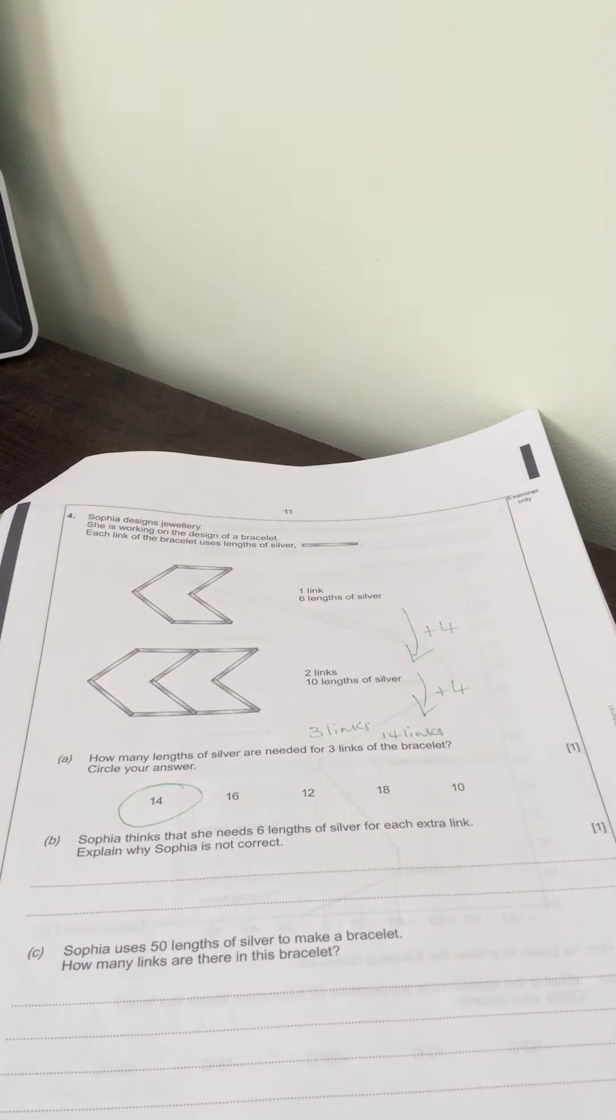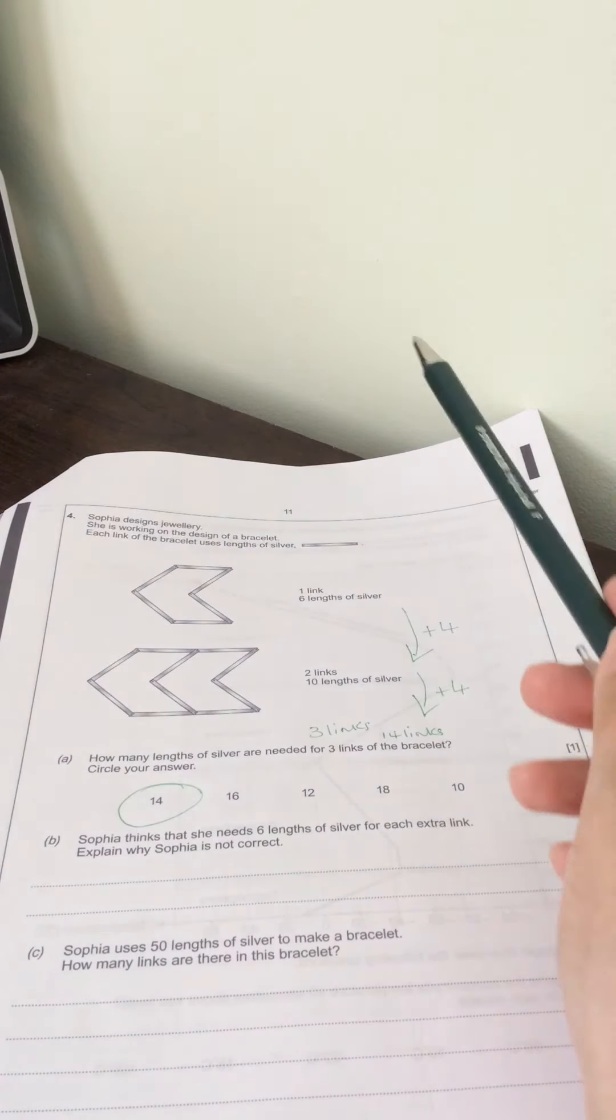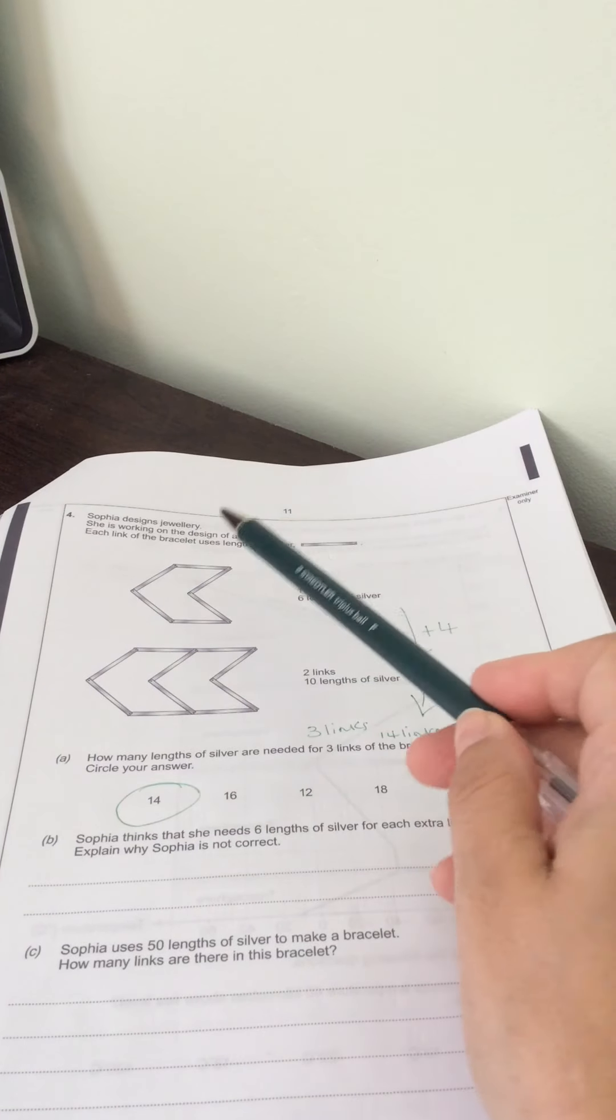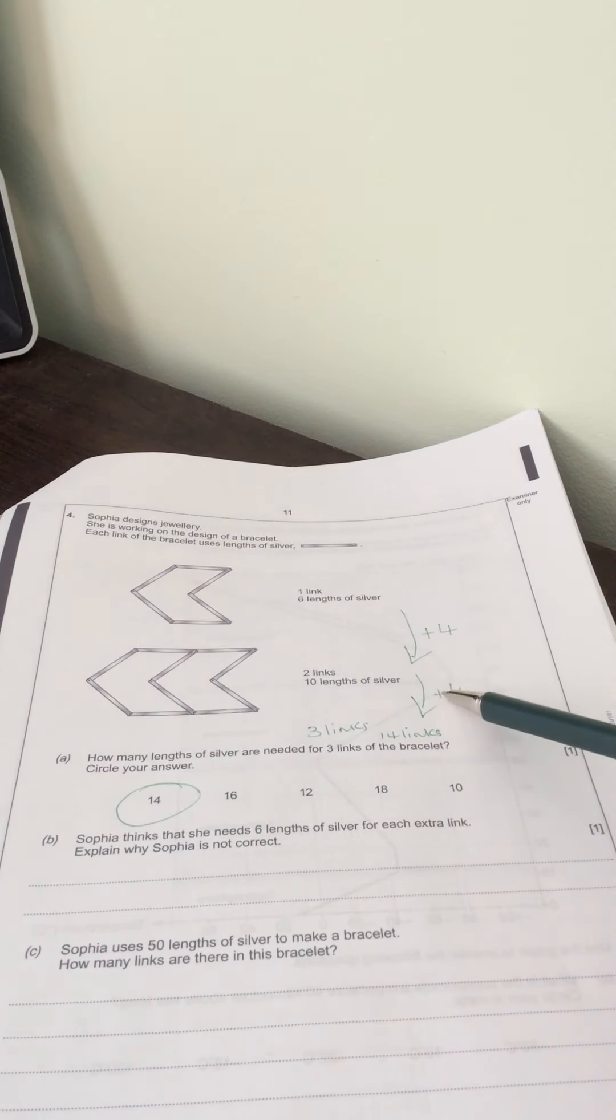Sophia thinks that she needs six lengths of silver for each extra link and explain why Sophia is not correct. So what they're expecting to see there is, if you look at it, we can see it's going up in fours.